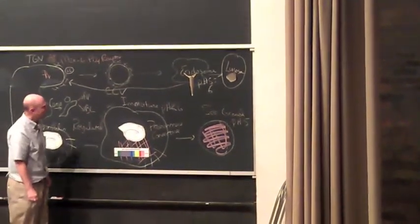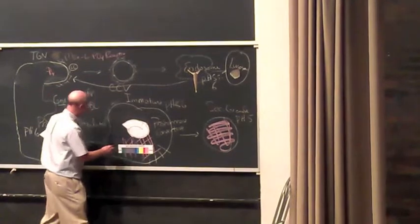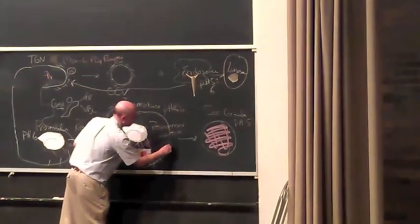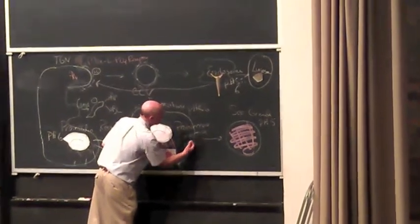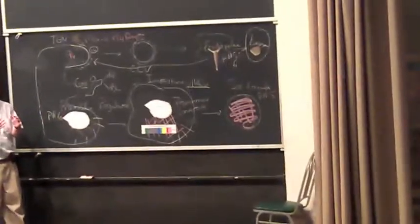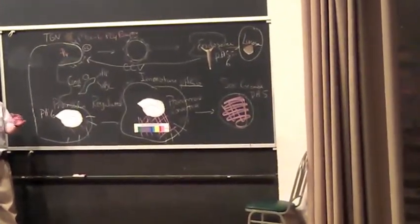The immature secretory granule continues to fall. The pH of the immature secretory granule continues to fall. The pH will fall below 6. That means there will be even more condensation of hormones like pro-insulin.